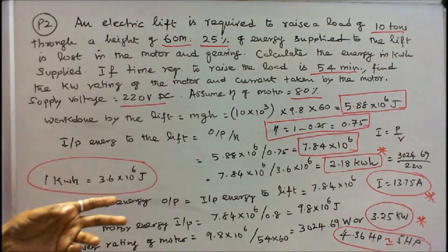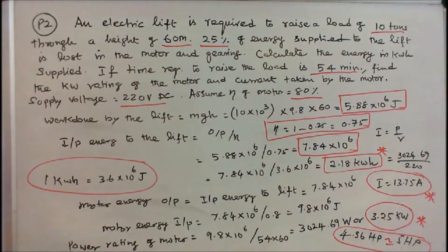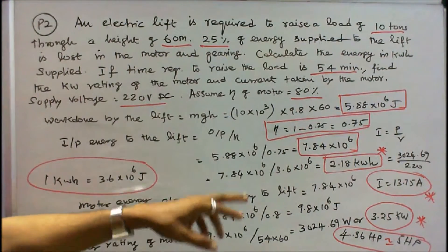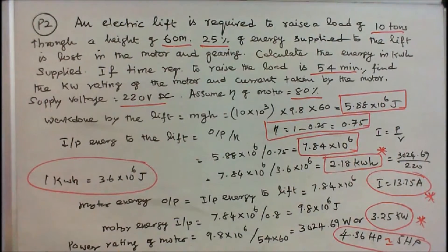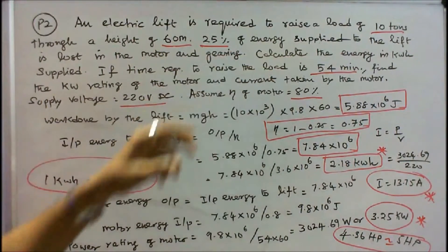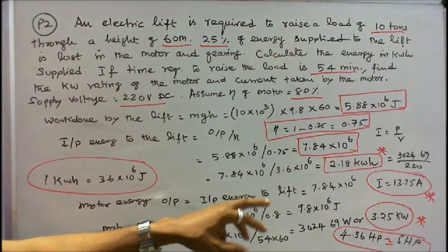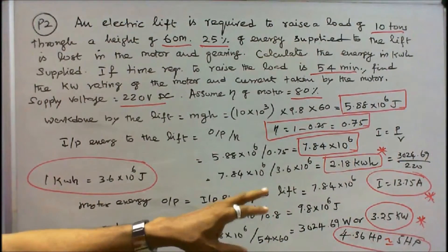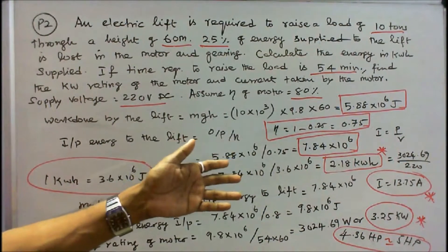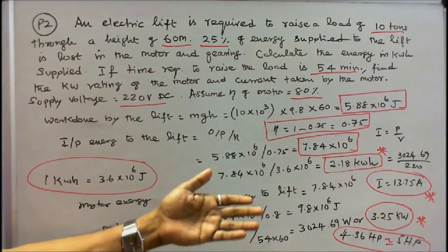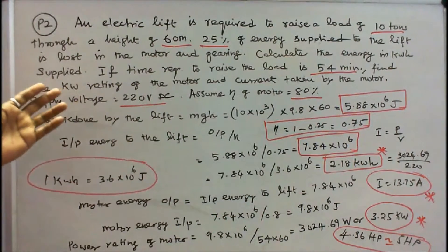We have to convert it into watts. Power rating of the motor is equal to 9.8 into 10 power 6 joules divided by time. Time is 54 minutes, converted to seconds: 54 into 60. That is equal to 3024.69 watts, or 3.25 kW, or 3.25 into 10 power 3 divided by 746, that is equal to 5 horsepower. The motor rating is 5 HP.